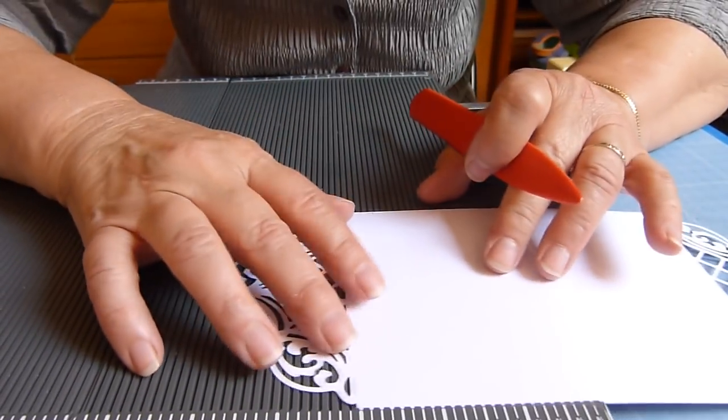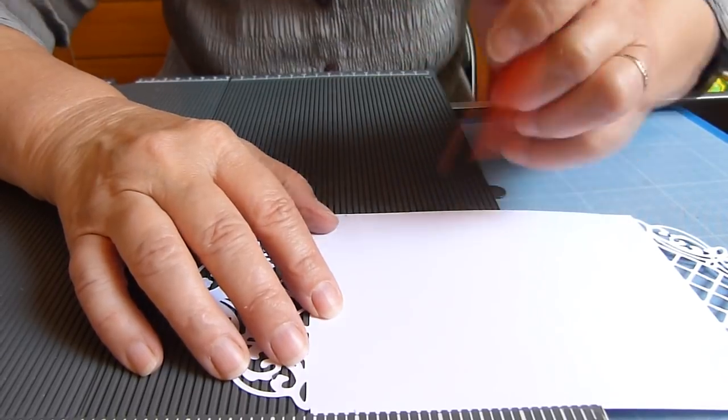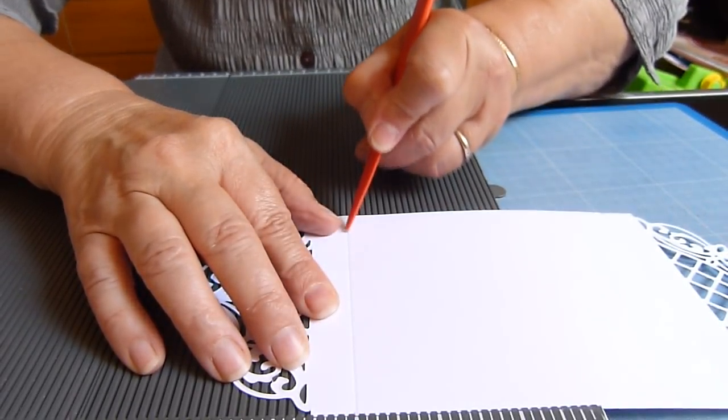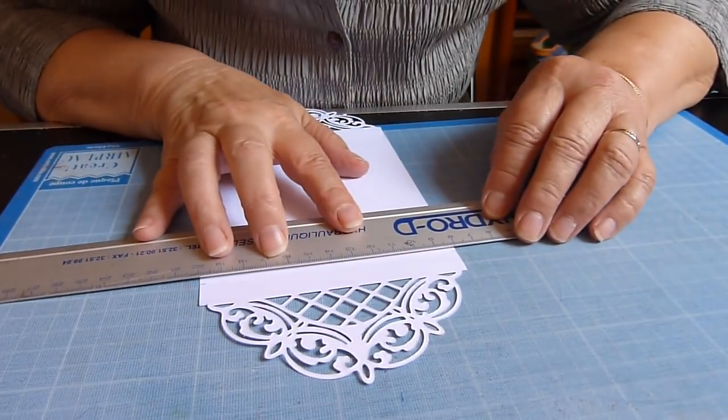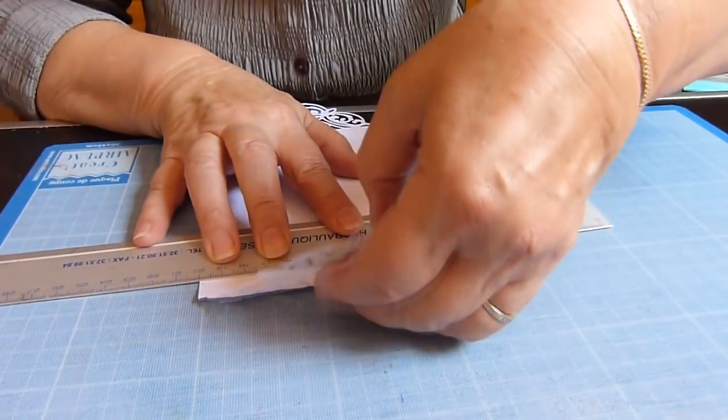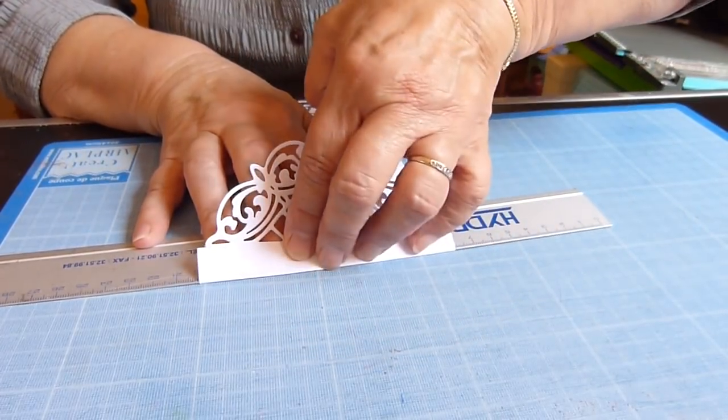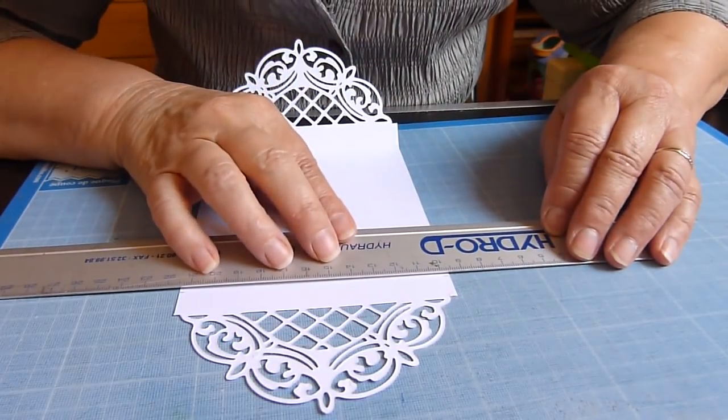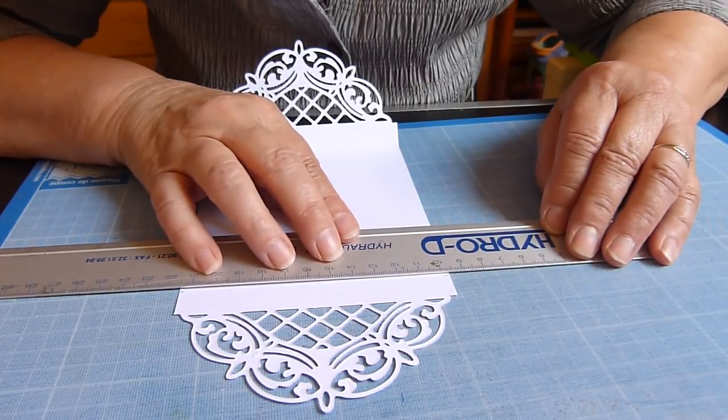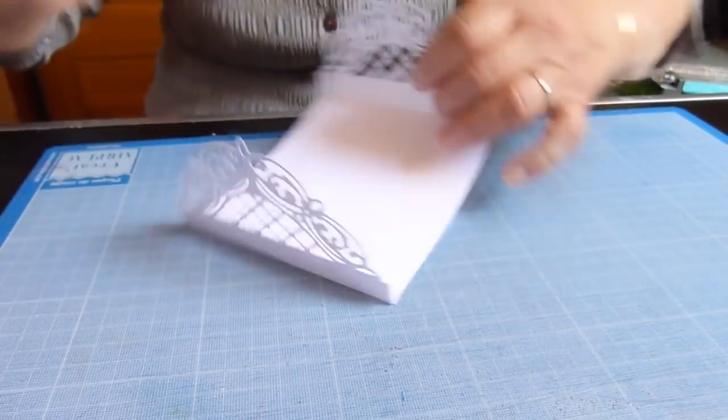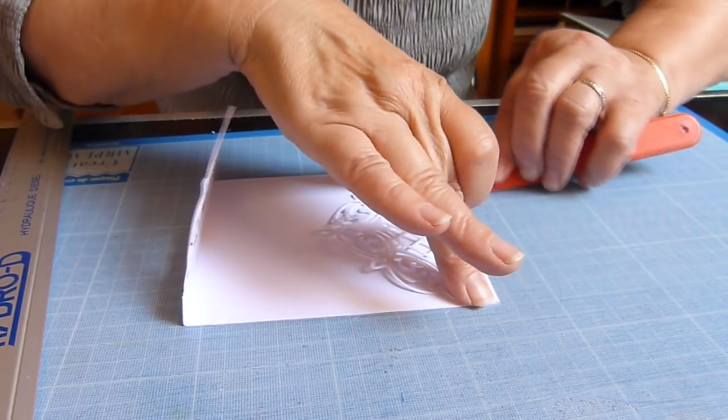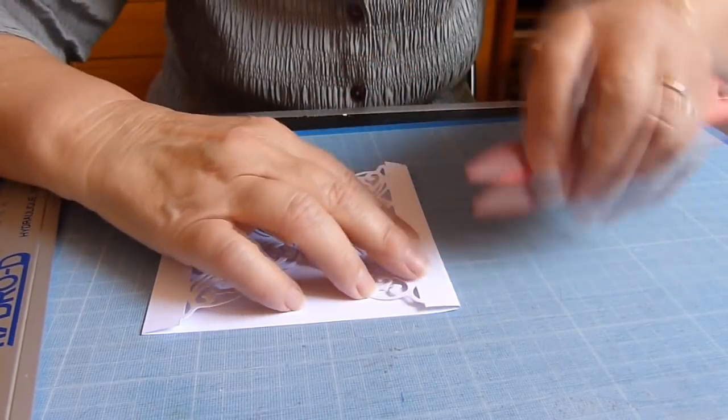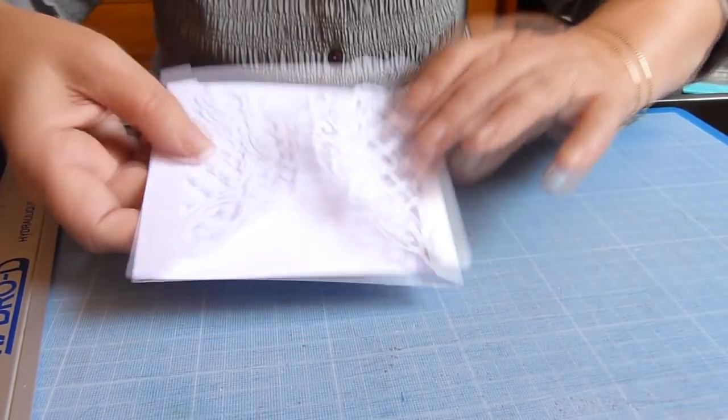En voilà une et en voilà deux. Pour faire la pliure, moi, je le mets sur l'envers. Et ensuite, on rabat.